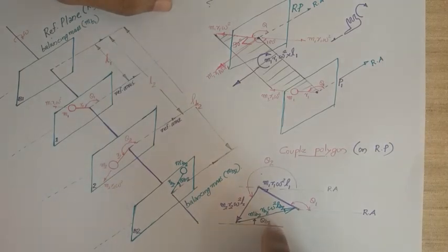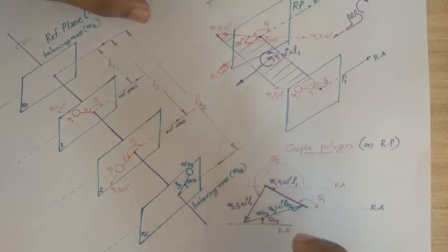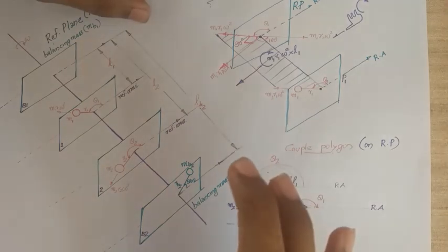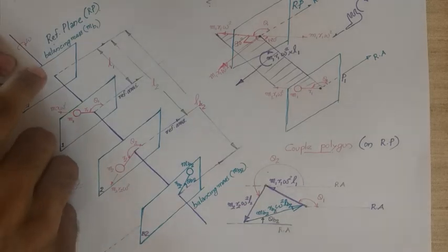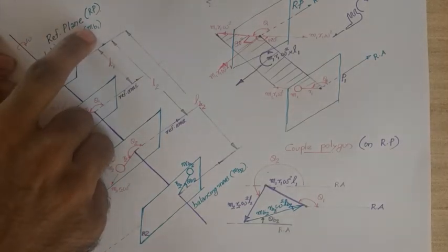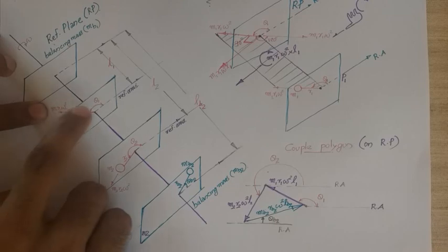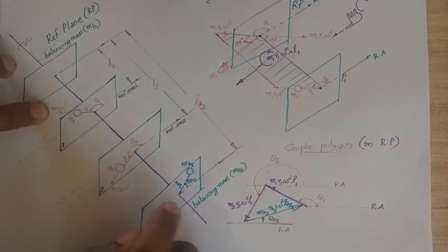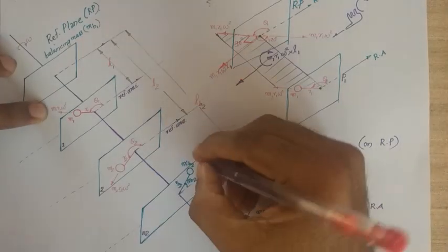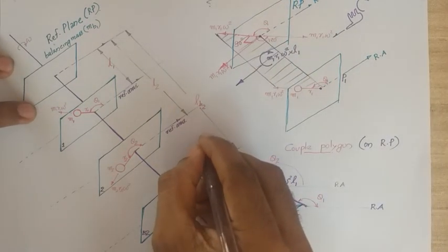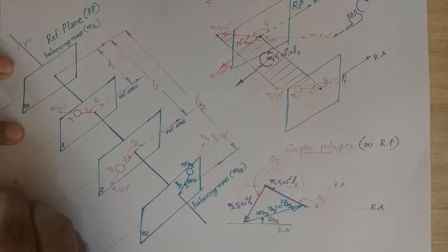Now that the couple polygon is complete, the force polygon must be constructed. The net force on the system must be zero. Two balancing masses are needed for dynamic balancing; one is mb1 placed at plane b1, and the other is mb2 already found.